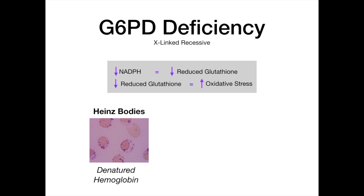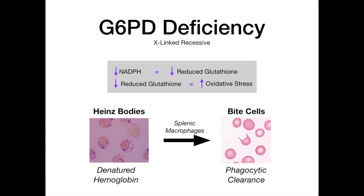What happens next? Macrophages sequestered by the spleen will notice the denatured hemoglobin balls inside the red blood cells and try to get rid of them—a macrophage's job is to eat foreign particles that shouldn't be present. So splenic macrophages will bite off little chunks of the red blood cell, trying to remove the Heinz bodies, but in doing so they leave what are called bite cells. Bite cells are literally red blood cells that have had bites taken out of them by splenic macrophages.